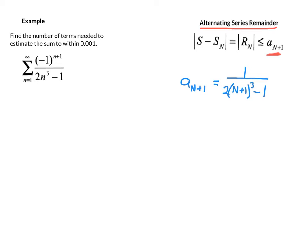We need to take that term and set that as less than or equal to our value of 0.001. So a sub n plus 1 has to be less than or equal to 0.001. In the case of an algebraic defined series, we can do some algebra here. We have 1 over 2 times (n+1) to the 3rd minus 1 is less than or equal to 1 over 1000.